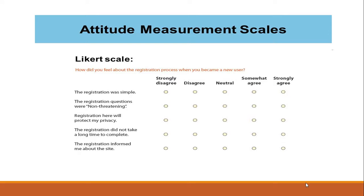After a researcher has selected a reliable and valid instrument, data for the study can of course be collected. That is it for step number three — instrumentation in designing causal comparative research.